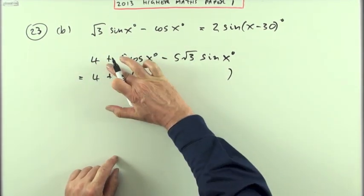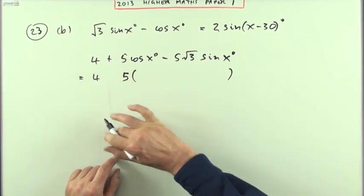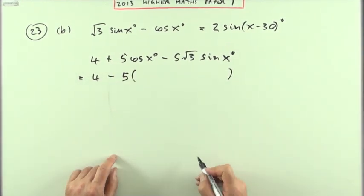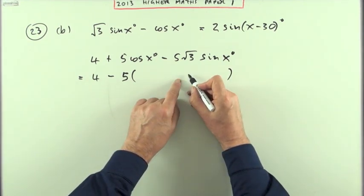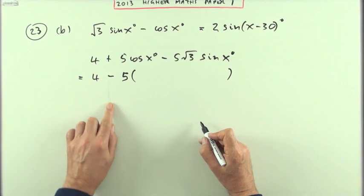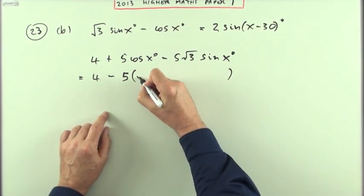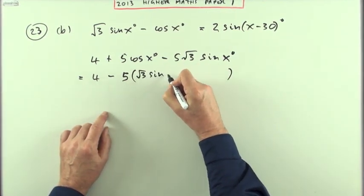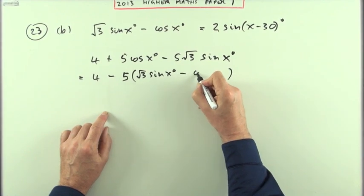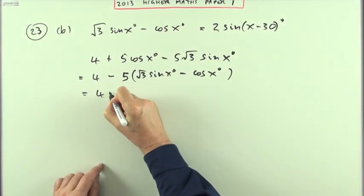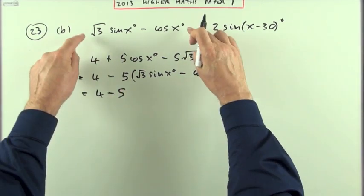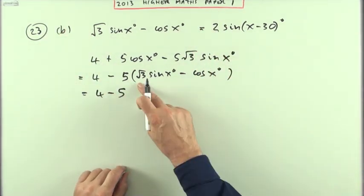So that suggests I really want to take a factor of minus 5, and then I'll be left with a negative cos x and a plus root 3 sine x, which I'll just rewrite the other way as root 3 sine x minus cos x.